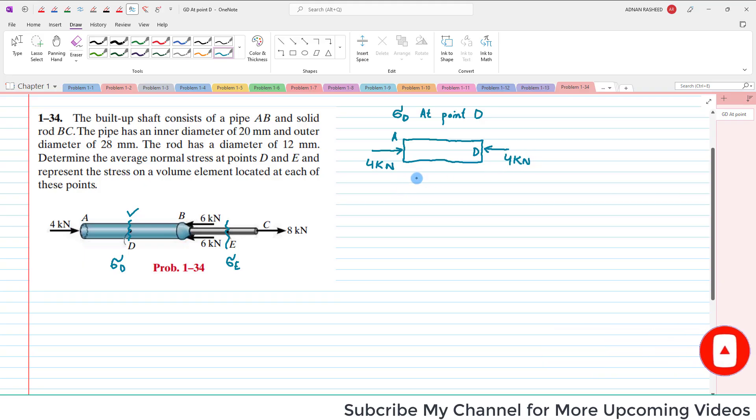You can find the stress at point D which is given as sigma D equals P divided by A. Now you can see that this load P is 4 kilo Newtons, so 4 times 10 raised to power 3.